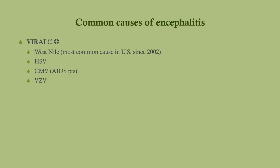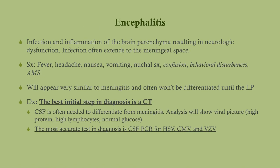Encephalitis is usually viral. West Nile is now the most common cause in the U.S. Also consider HSV, CMV — particularly in immunocompromised patients — and varicella-zoster. Encephalitis is generalized inflammation of the brain parenchyma resulting in neurologic dysfunction. Symptoms are similar to meningitis but also include altered mental status. The best initial diagnostic step is CT. CSF analysis will show a viral picture: elevated protein, elevated lymphocytes, but normal glucose. The most accurate test is PCR of the CSF.